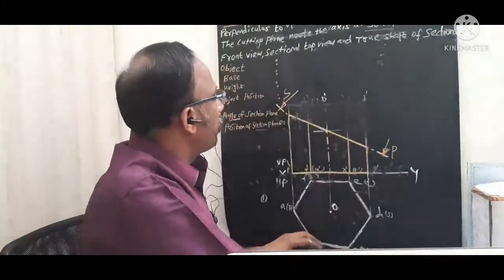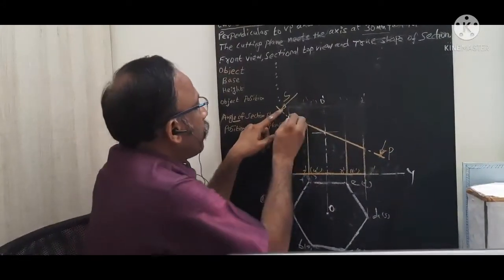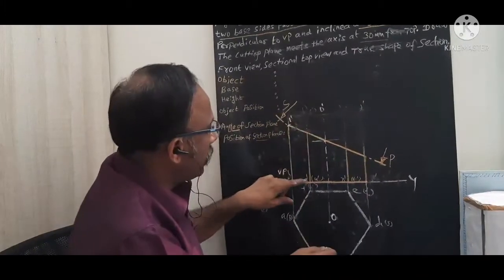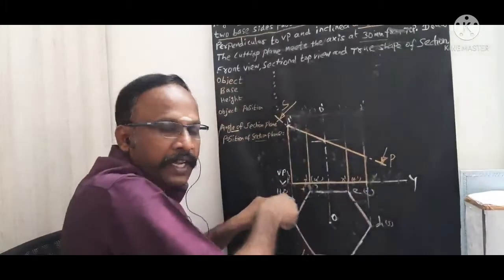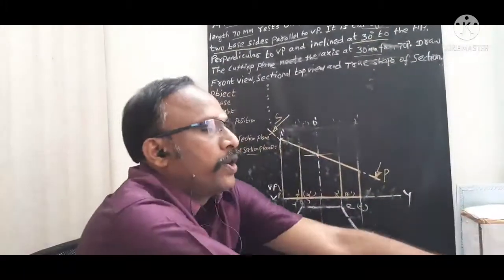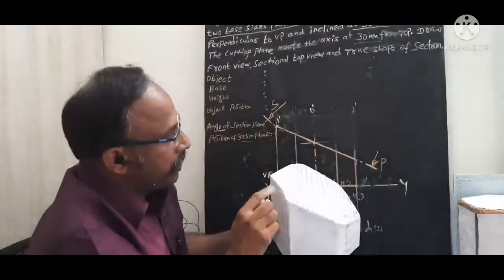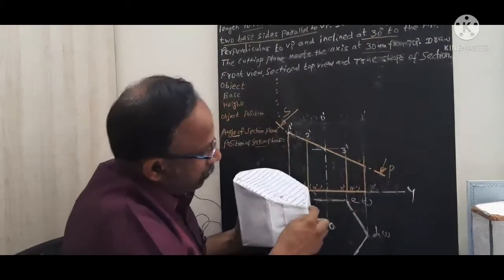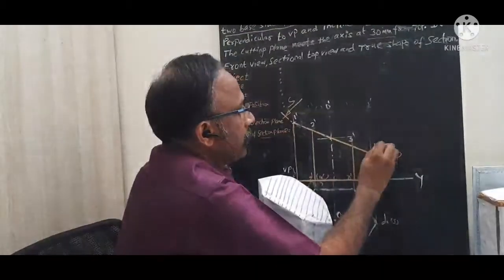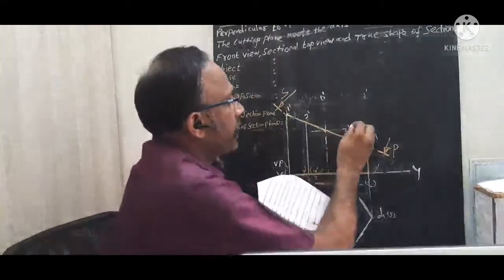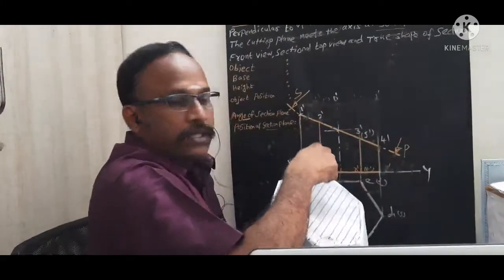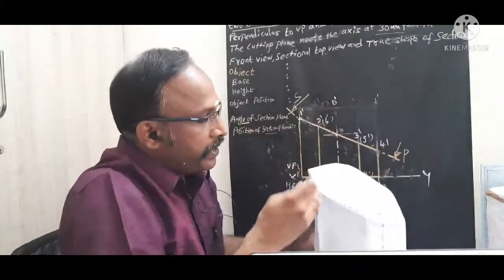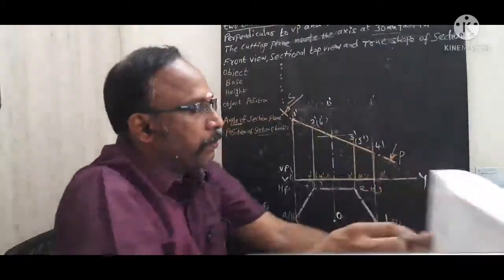Now mark the cutting points where the section plane intersects the vertical edges. On edge AB, mark point 1 and 1-dash. Moving along the section plane, mark point 2-dash on the next edge, then point 3, point 4, and on the back side the invisible points 5-dash and 6-dash. There are six cutting points total on the longer edges. These are marked on the section plane in the front view.